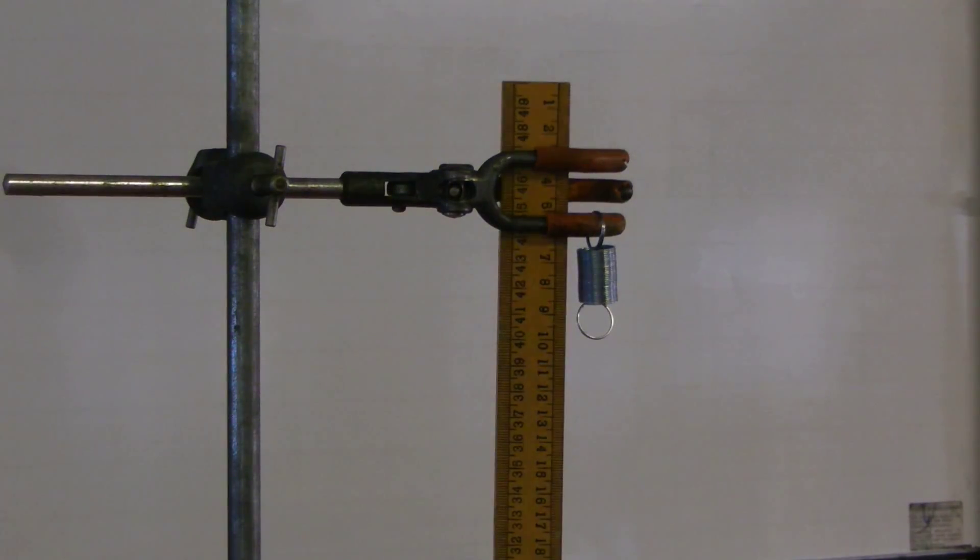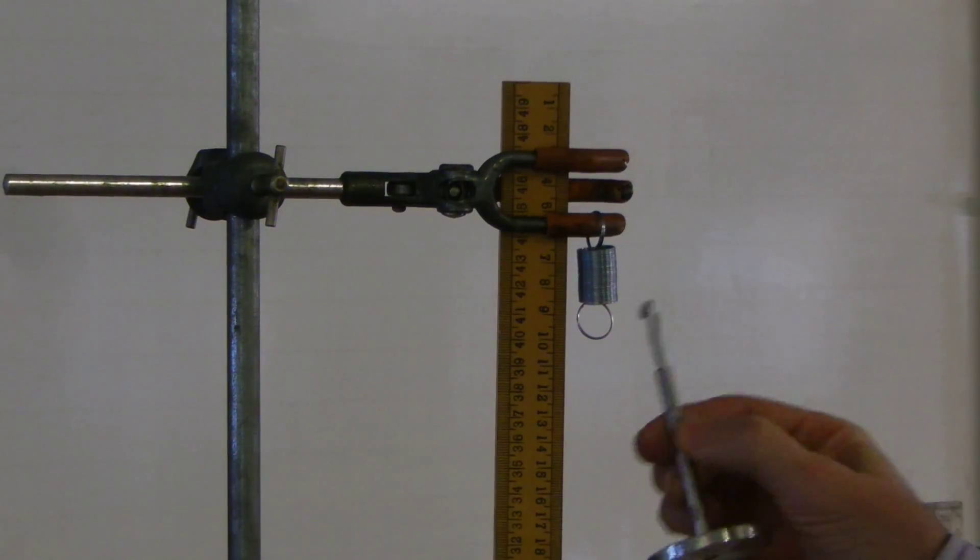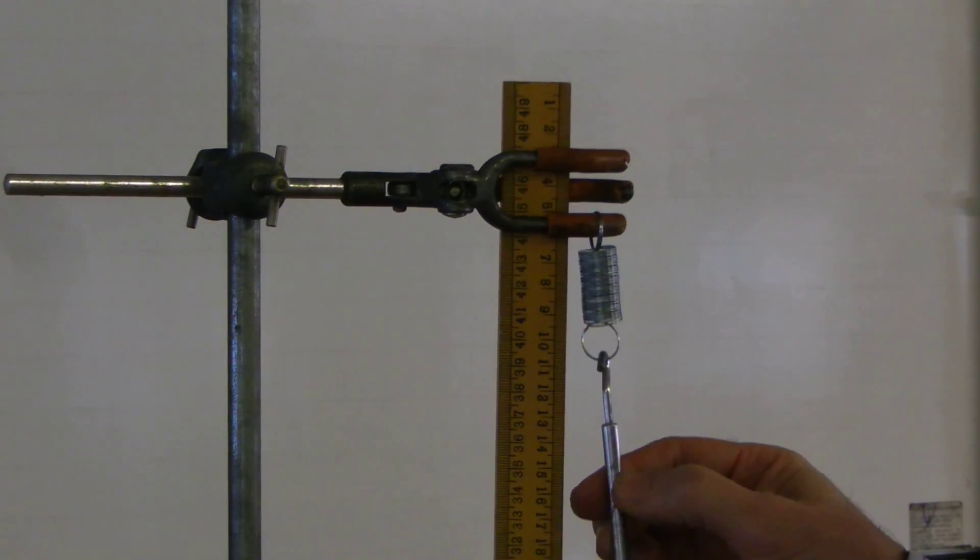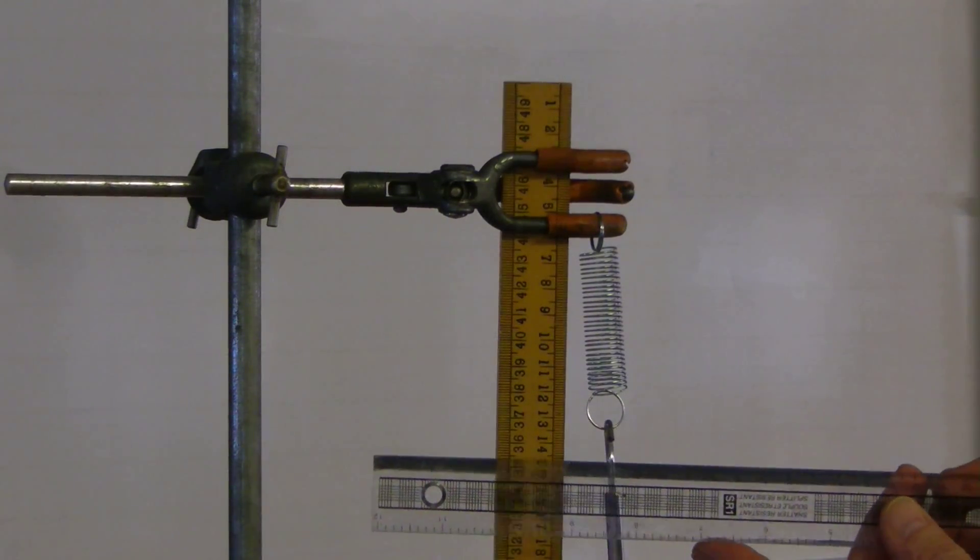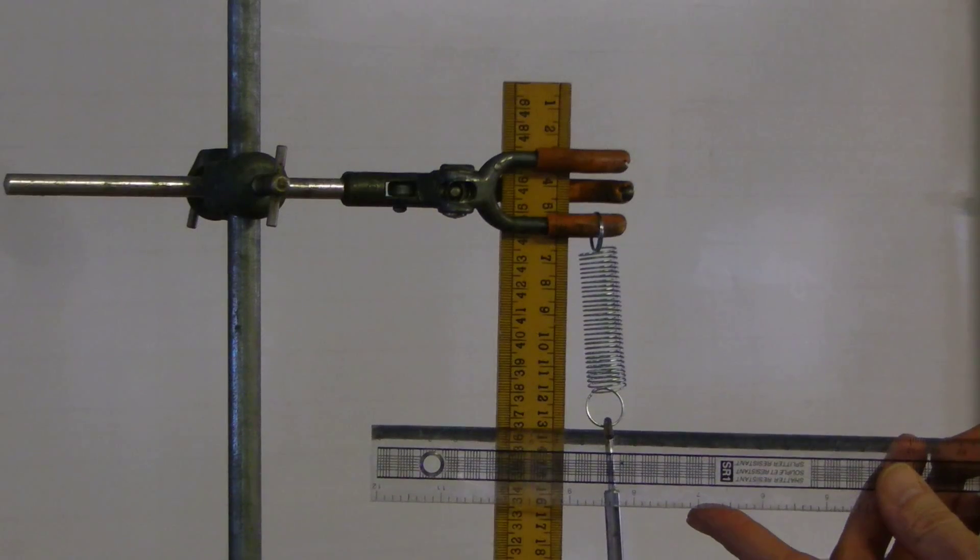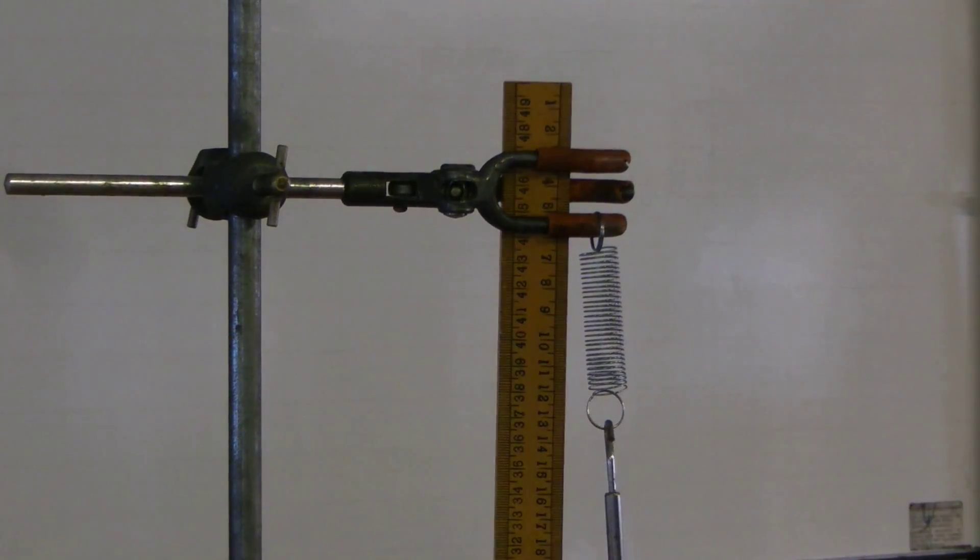Having done that, you will then apply your first force. This hanger, on its own, is 100 grams. Now, thanks to gravity, that is 1 newton. So place that onto your spring. Allow it to extend. And then read across. You could use a ruler to help you with this. Read across as accurately as you can. And I reckon that is about 13.3 centimetres.